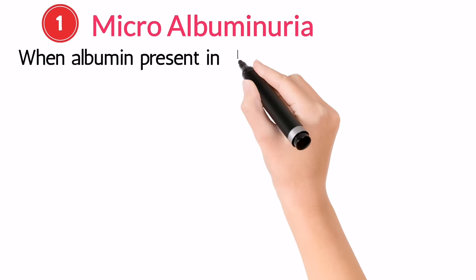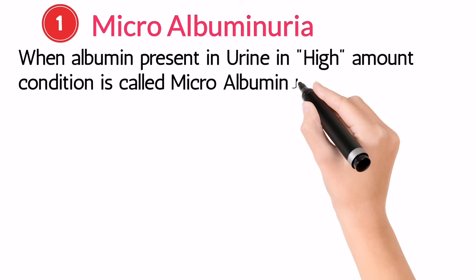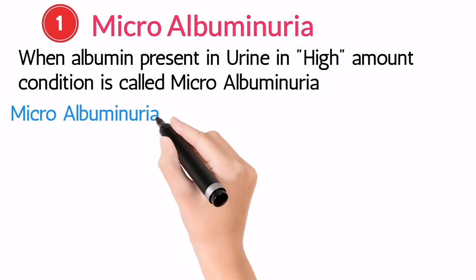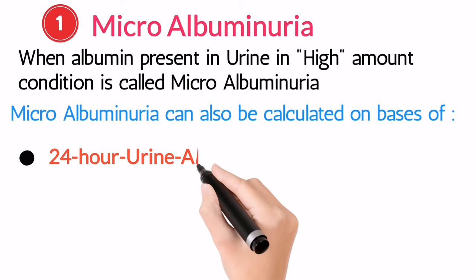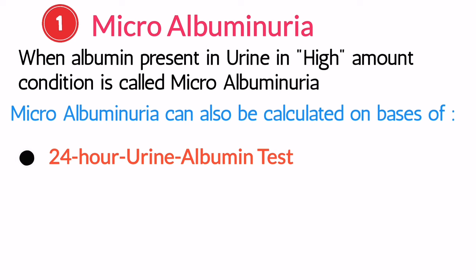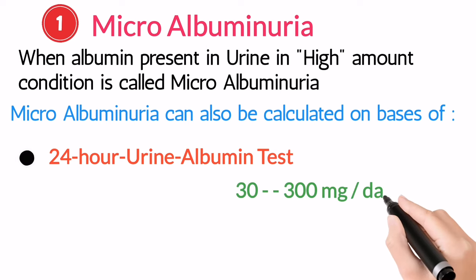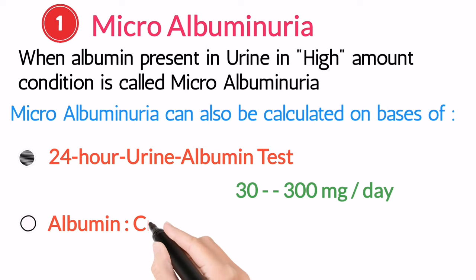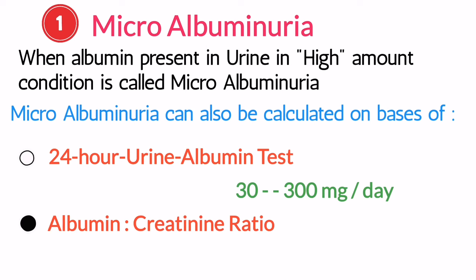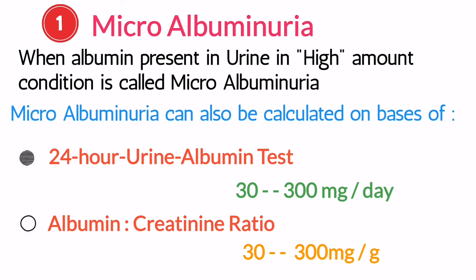First we will discuss microalbuminuria. If albumin is present in urine in a high amount, it's called microalbuminuria. You can confirm microalbuminuria by two important lab tests. One is the 24-hour urine albumin test — if the value is between 30 to 300 milligrams per day, it confirms microalbuminuria. The second test is the albumin-creatinine ratio — if this ratio is between 30 to 300 milligrams per gram, it also confirms microalbuminuria.